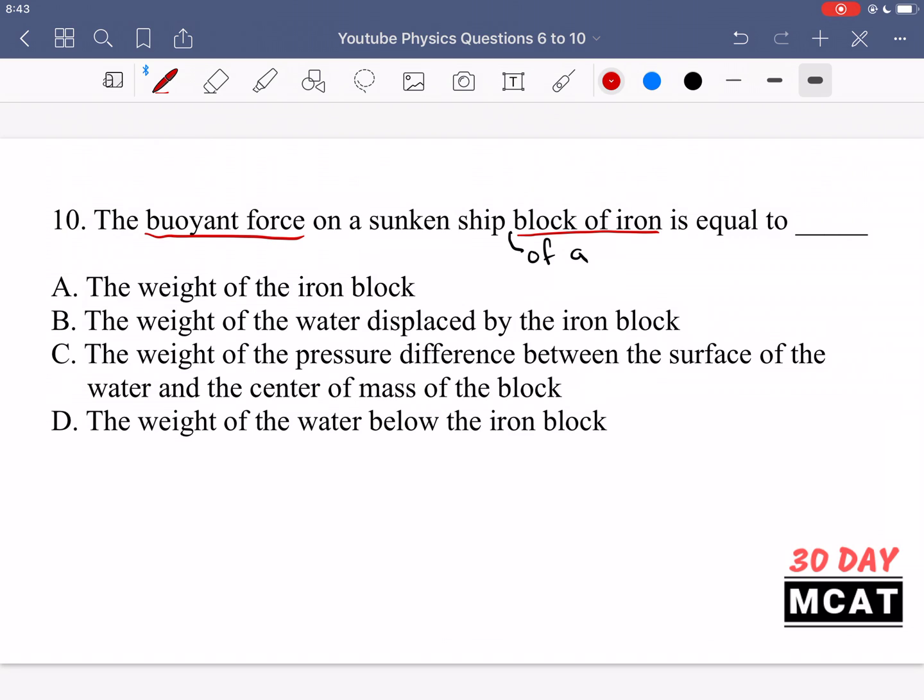So the cork is lighter than the force of water, therefore it will go up and float. Aluminum will sink and then lead is even heavier, so it will sink more. So buoyant force always dependent on the weight of water that an object displaces.